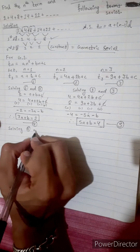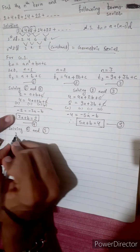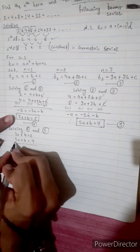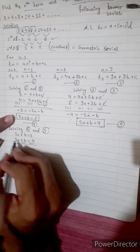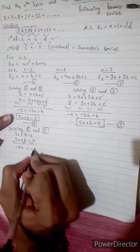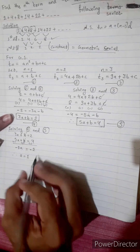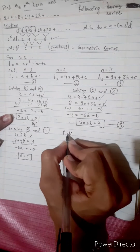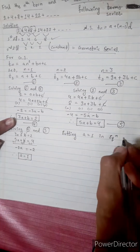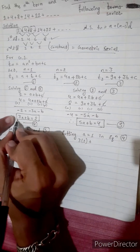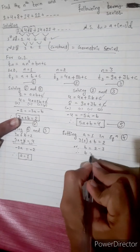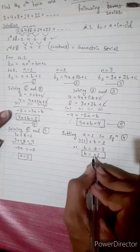Solving Equations 4 and 5: 3a plus b equals 2, and 5a plus b equals 4. Subtracting gives 2a equals 2, therefore a equals 1. Substituting a equals 1 into Equation 4: 3 times 1 plus b equals 2, so b equals 2 minus 3, therefore b equals minus 1.